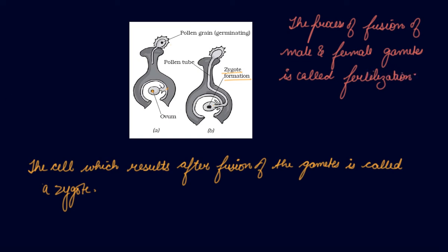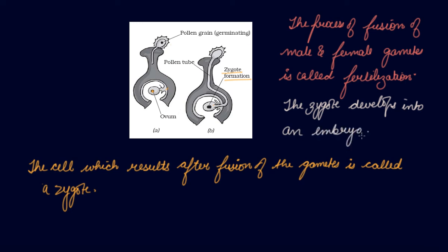After fertilization takes place, the zygote develops into an embryo, and after that it converts itself into a new flower or a new plant. This was all about pollination and fertilization. I hope you have understood this topic completely. If you have any doubts or questions, please write in the comment box. Thank you very much.